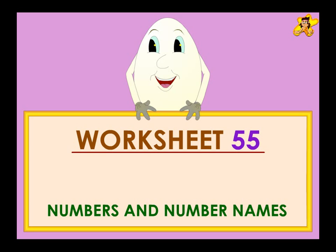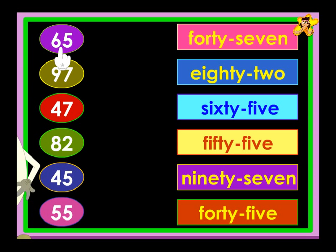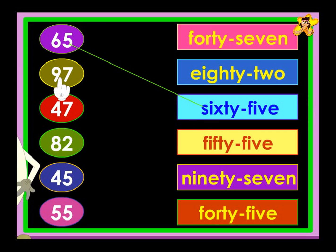Worksheet 55: Numbers and number names. Match the number with the number name. 65 — SIXTY-FIVE — 65. 97 — NINETY-SEVEN — 97.